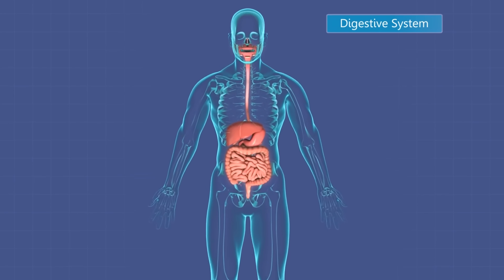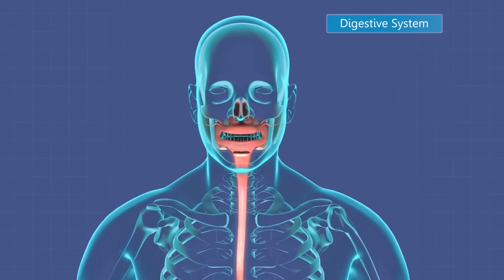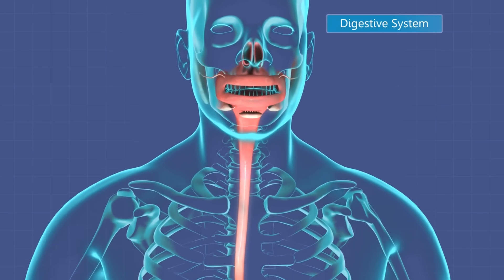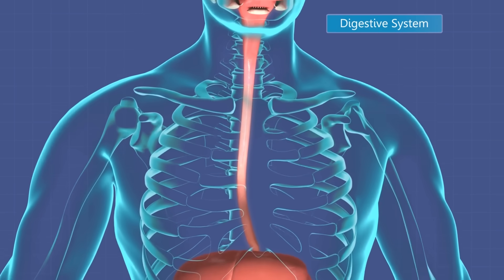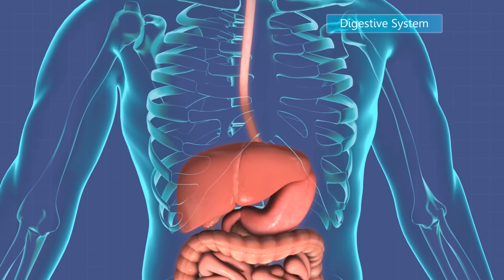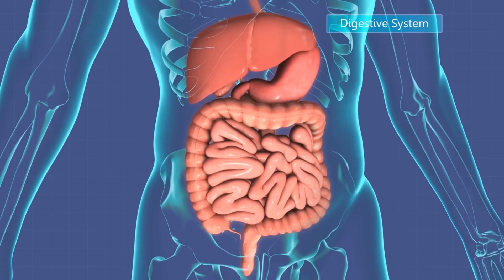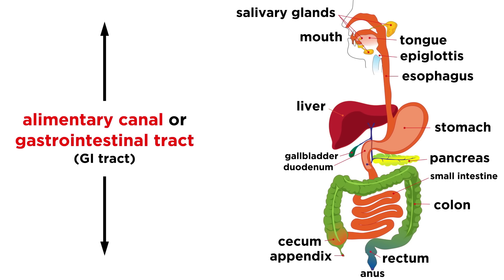Earlier in the series, we learned about the digestive system. This system is centered around the gastrointestinal tract, which runs from the mouth, where food enters the body, through the stomach and intestines, all the way down to the anus, where waste is expunged. The purpose of this system is to digest food and extract nutrients from it, so as to generate energy for the body to use, and we previously studied some diagrams depicting all of the components of this system in reasonable detail.